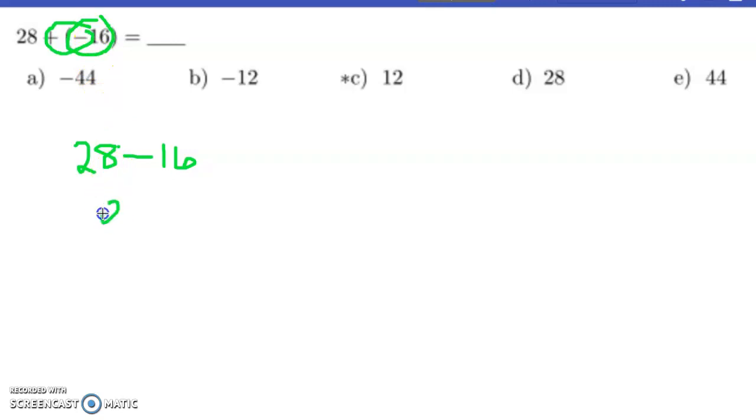And we know that 28 minus 16, I'm going to go ahead and write this up and down because it's easier to do. 8 minus 6 is 2, and 2 minus 1 is 12. So it's a positive 12.